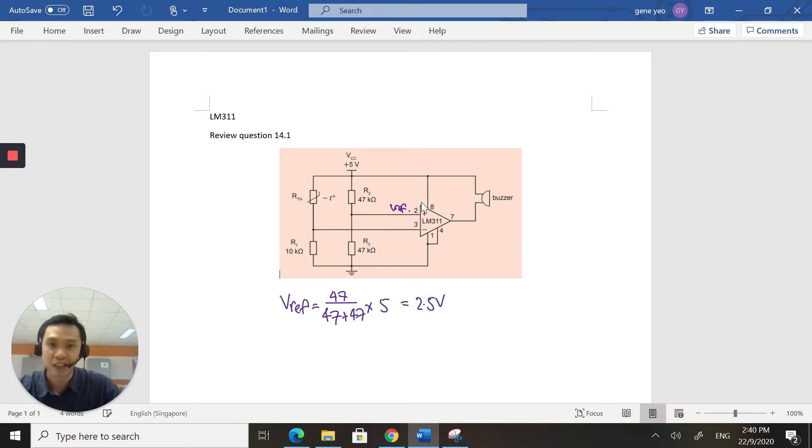So this is fixed at 2.5 volts. Let's write that down here. Then, let's look at the inverting terminal. This is my thermistor, an NTC thermistor. You should know that for the NTC thermistor, if I plot the resistance against the temperature, the graph will look like this.